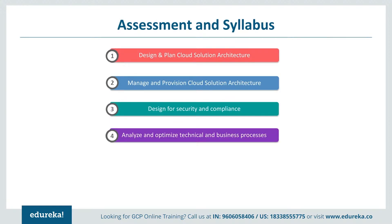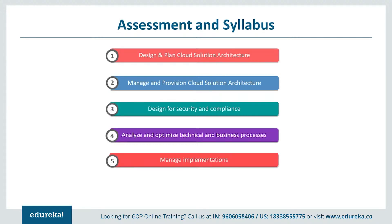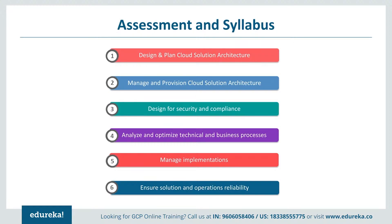The fourth section is analyzing and optimizing technical as well as business processes. It includes software development lifecycle planning, continuous integration and continuous deployment, troubleshooting and post-mortem analysis, testing and validation, IT enterprise processes, stakeholder management, and decision-making processes. The fifth section is managing implementation — advising development or operations teams to ensure successful delivery of solutions. This covers application development, testing frameworks, and data and system migration tools.